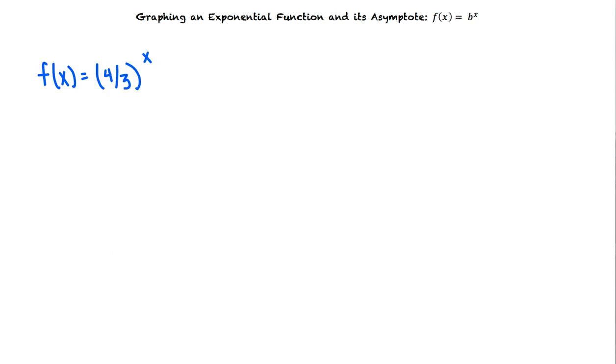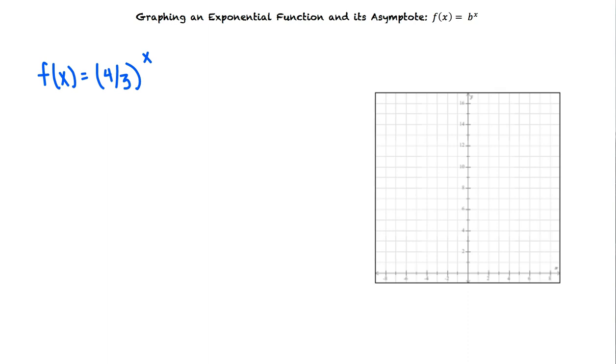Say we want to graph the exponential function f of x equals 4 thirds raised to the x. Our first step is to plot five points. Let's find these points by substituting the x values negative 2, negative 1, 0, 1, and 2 into our function.